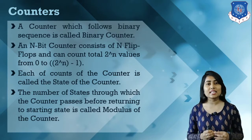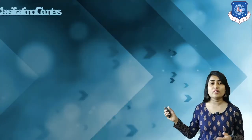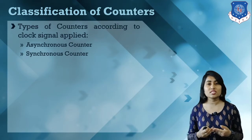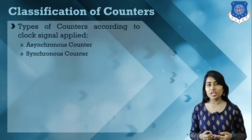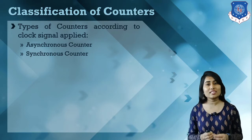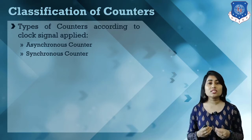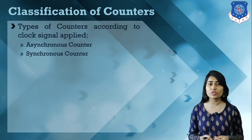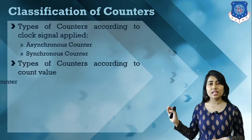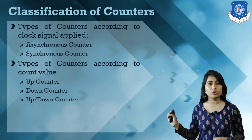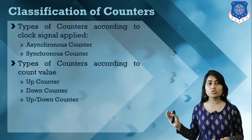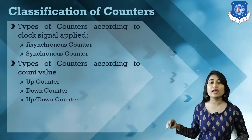Now let's discuss the classifications of counters. We can classify counters according to the clock signal applied, giving us two types: asynchronous counter and synchronous counter. We can also classify counters according to values of count, giving us: up counter, down counter, and up-and-down counter.